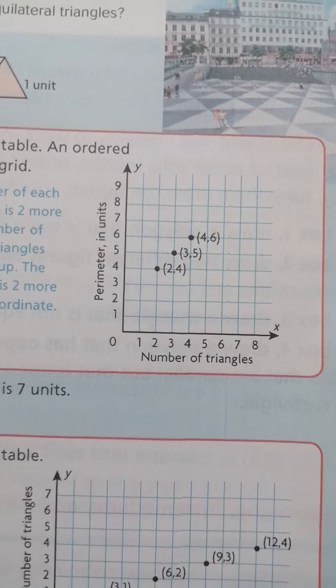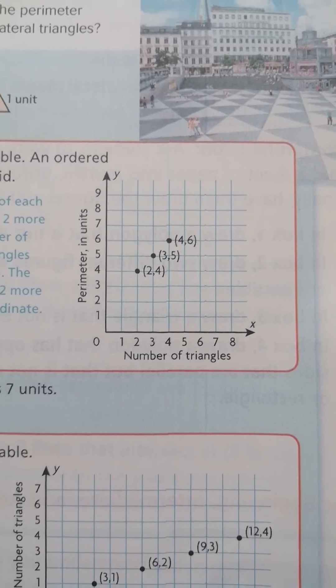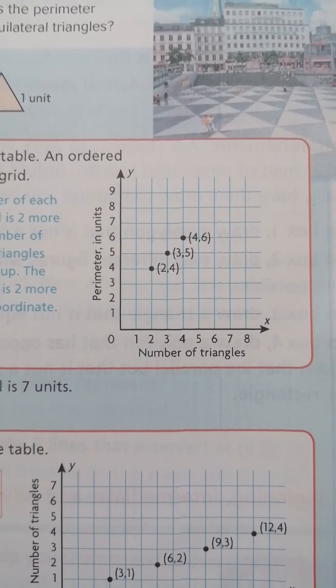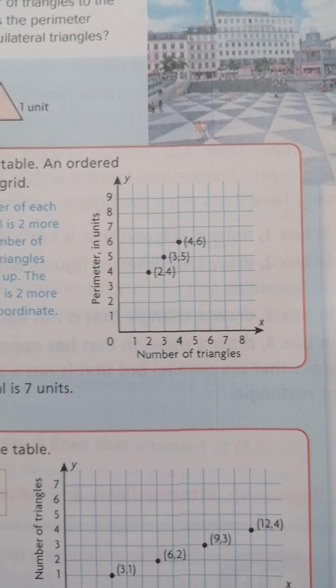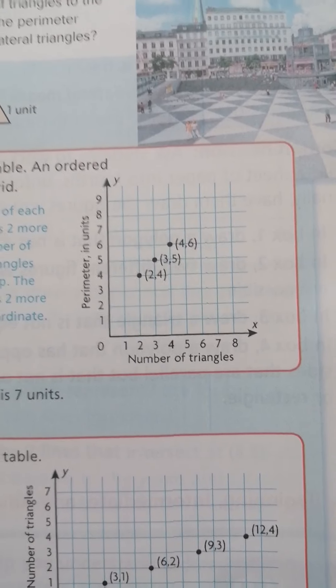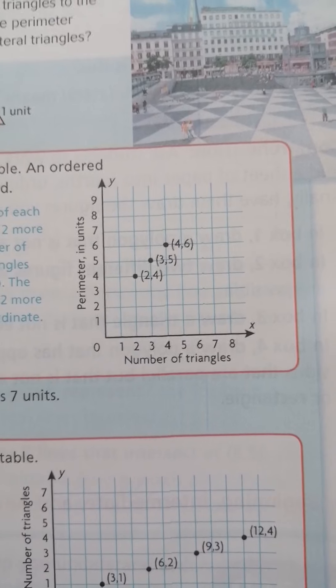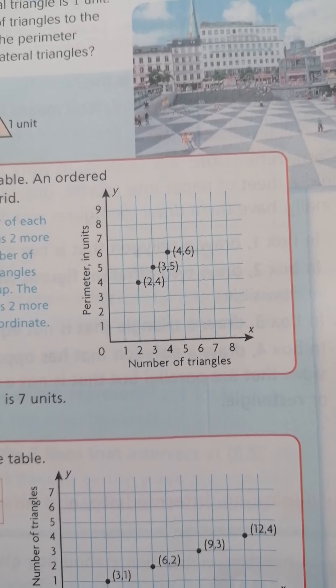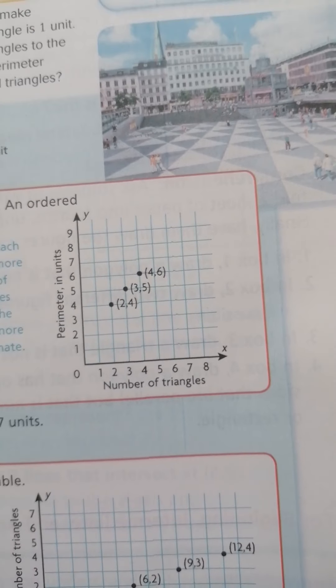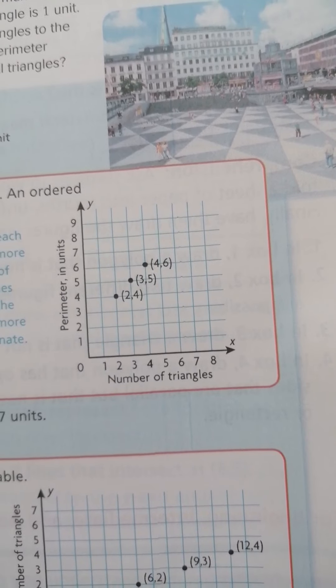Then make in a graph, write number of triangles and perimeter in unit, then write ordered pair 2 and 4, 2 in x and 4 in y. 3 in x, 5 in y, 4 in x and 6 in y, and the last one, 5 in x.